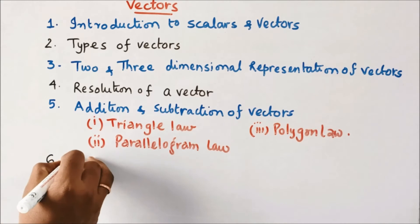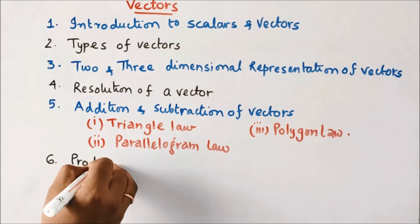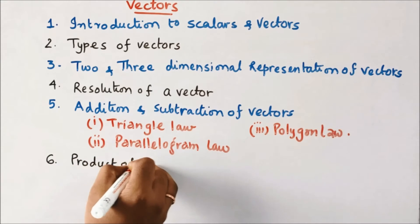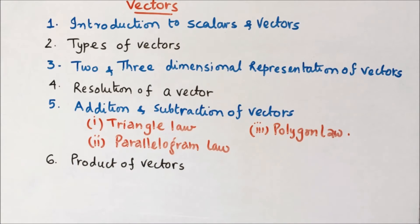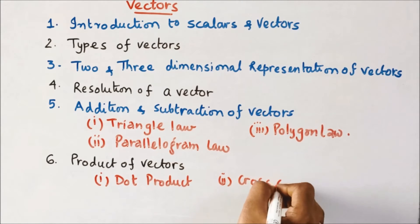Number six: product of vectors, in which we have dot product and cross product.